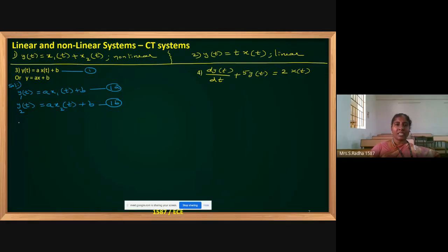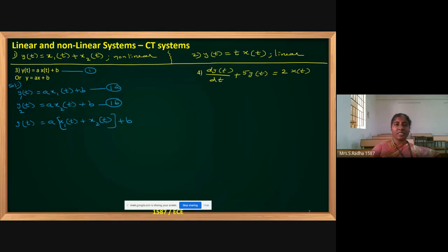Third time, in the place of x I have to put x1 plus x2. So y of t equals a into x1 of t plus x2 of t. Note that 'of t' is optional. In equation 1, putting x1 of t plus x2 of t, a will be retained and b also will be retained. Let this be equation 2, and I am giving the name y3 for the output.